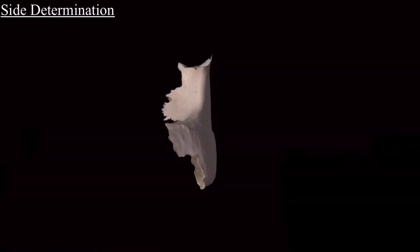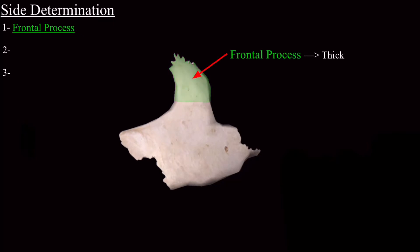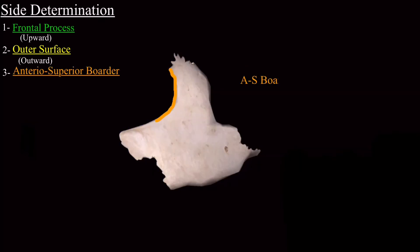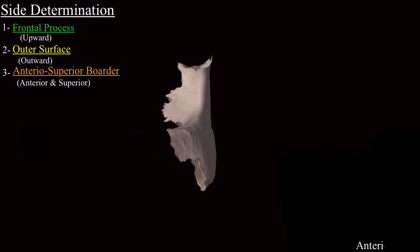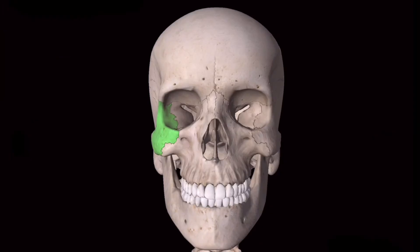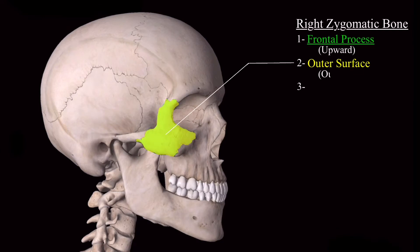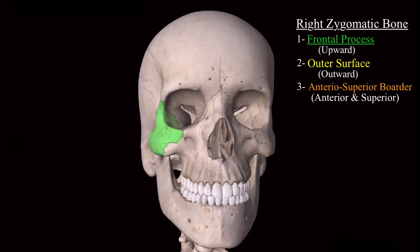For side determination of the zygomatic bone, three main points must be remembered. First, the frontal process is thick and directed upward. Second, the outer surface is convex and directed outward. Third, the anterior superior border is concave and directed anteriorly and superiorly. Using these criteria, you can identify the left or right zygomatic bone.